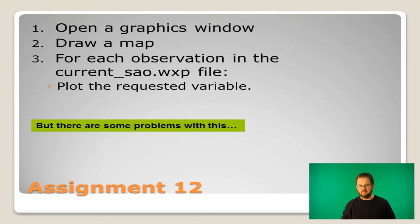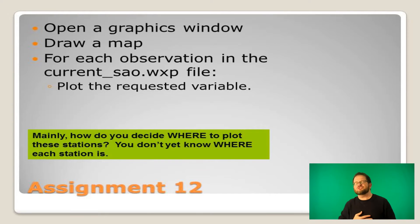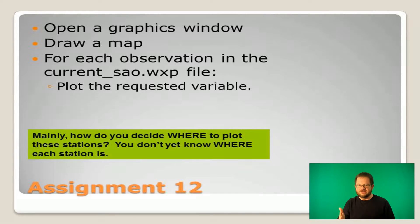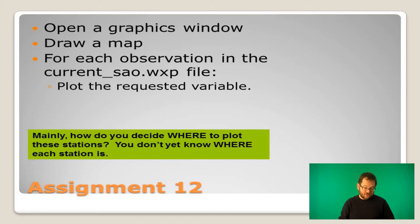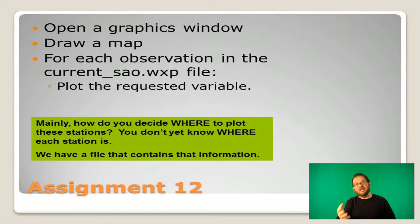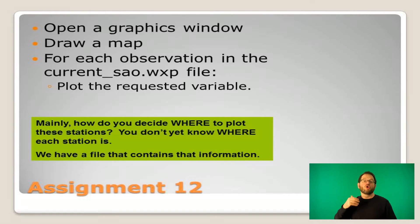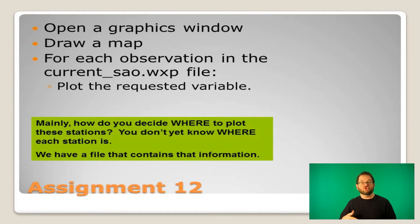You'll probably prompt the user to enter which variable to plot. You read in an observation, decode it, and then figure out where to plot that data. Wait — that seems to be a problem. How are you going to decide where to plot this? You just read in a code KOMA and its temperature code, but you don't know where KOMA is on your plot. You're going to use GPRINTF to plot it at the right location X, Y — but the problem is you don't know where X, Y is. So we're going to have to work with a file we read in before doing any of the graphics. Right at the very beginning of your program, you'll open a file containing all the location information for every station.